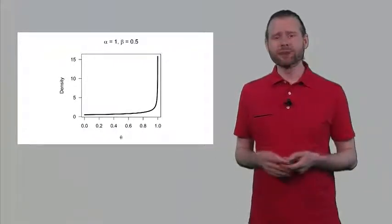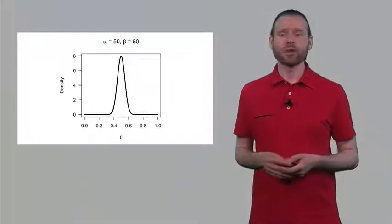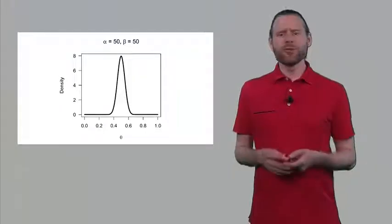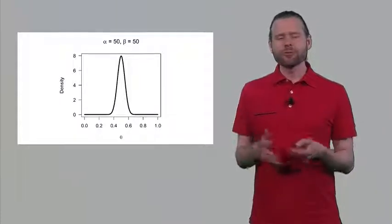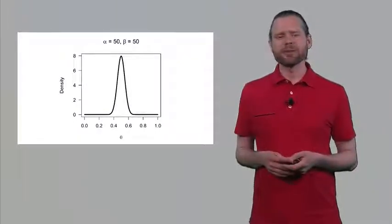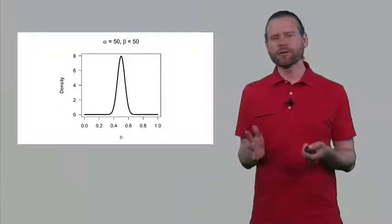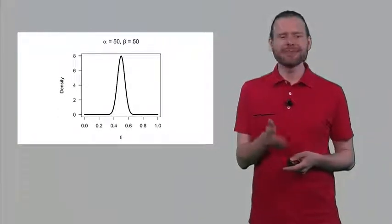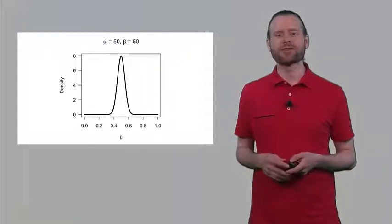You might also think this is a perfectly fair coin — most coins are fair after all. So you think the coin should come up heads 50% of the time, and you have a very strong belief in this. This is illustrated in a graph where there is a very high peak at 0.5 on theta. But you are also willing to allow for some variation — it might be that the coin is not perfectly fair, perhaps coming up heads a little more or a little less often.